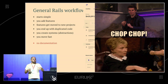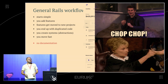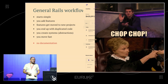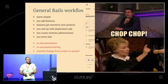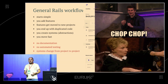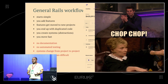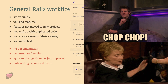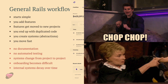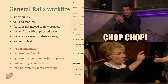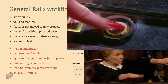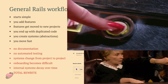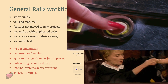This is what happens — probably not with you guys, but in other projects. The things you write internally, nobody writes documentation for them, nobody does automated testing. Systems change from one project to another. At some point onboarding becomes difficult — you bring new people in and nobody knows how something works because the person who built it left the company. Internal systems decay over time, and usually somebody comes, hits the reset button, and says let's just rewrite it.